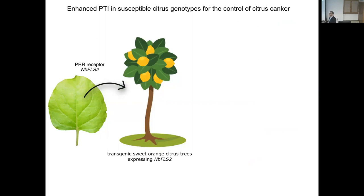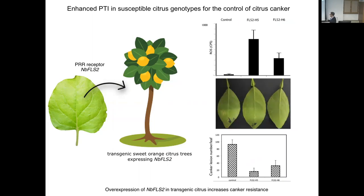This system allows identification of plants that are less susceptible, but some citrus are normally very susceptible and don't produce high ROS. So how can we improve the tolerance and resistance of these plants? We used transgenic tools: we took the FLS2 PRR receptor from Nicotiana benthamiana and generated transgenic sweet orange. Sweet orange usually produces low ROS using flagellin-22. Transgenic plants expressing Nicotiana benthamiana FLS2 showed high ROS compared to controls, and after infection with living bacteria, caused fewer lesions on leaves. So overexpression of Nicotiana FLS2 in transgenic citrus increases canker resistance.